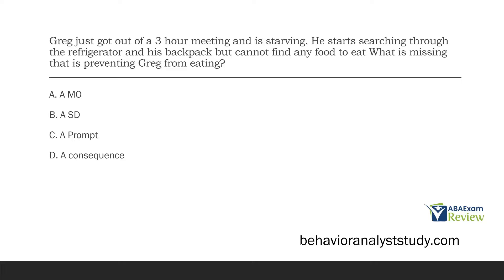The problem is he can't find any food to eat. So the thing that is missing is B, the SD — the discriminative stimulus. The SD simply signals that a consequence is available. He can have all the motivation in the world and be as hungry as he wants, but until there's an SD for food, he can't eat. C, a prompt: without an SD you can't have a prompt, and the prompt isn't preventing Greg from eating. The lack of a signal that food is available is what's preventing him.